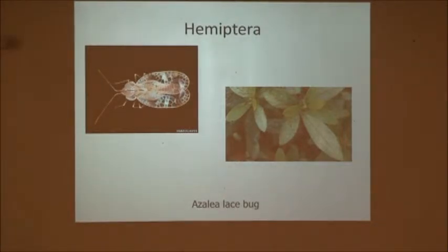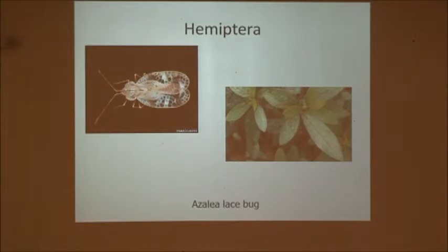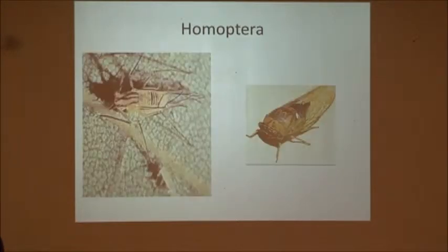Hemiptera — this is a picture of an azalea lace bug. This is pretty common, and I put up here what damage on your azalea bush will look like if you have a problem with azalea lace bugs. This order includes a lot of flying insects with segmented wings, but that's the most common one you'll see around here.